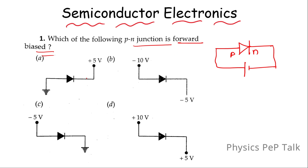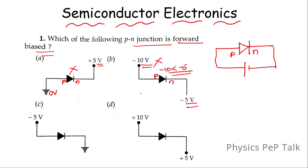The forward bias matches this option. See option A: this is P-side and this is N-side. P is connected to ground, so it is at 0 volts, and N is connected to plus 5 volts. Since N potential is greater than P potential, this is reverse biased. In option B, P is connected to minus 10 volts and N is connected to minus 5 volts. Minus 10 is less than minus 5, so this is also reverse biased.